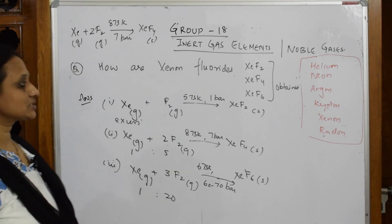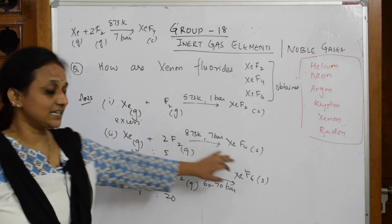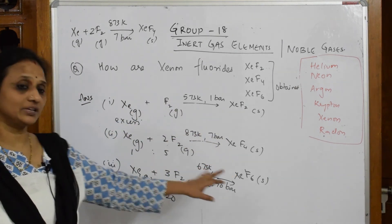Please note this question: with 1 mole I get XeF2, 2 moles I get XeF4, 3 moles I am going to get XeF6.